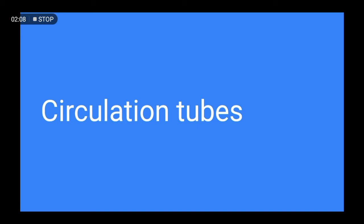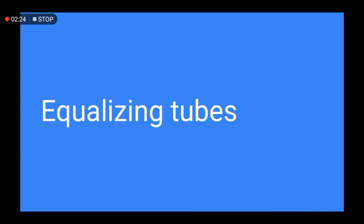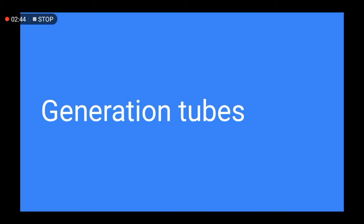Circulation tubes are used in Sterling water tube boilers for continuous circulation of water. They play a very important role because good water circulation is a key feature of this boiler, which separates it from other types. Equalizing tubes have two functions: the first is to connect the steam drums, and the second is to help the flow of water along with the circulation tubes.